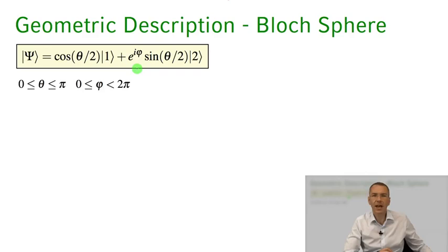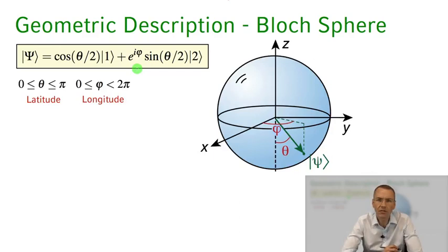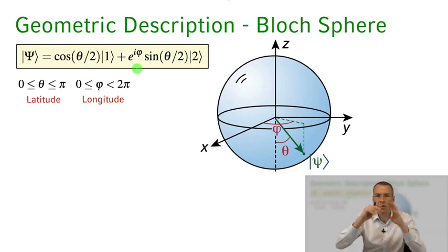So if you see those angles theta and phi, this kind of suggests thinking of them as latitude and longitude coordinates. So you can actually think of any state now being represented as one point on a unit sphere, on the surface of a unit sphere, and with its coordinates theta and phi, the latitude and longitude coordinates on that sphere.